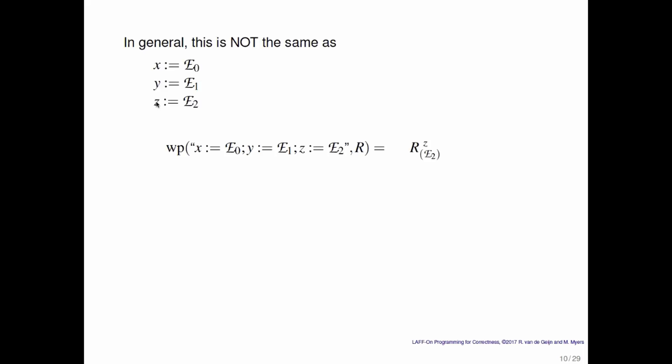You take your postcondition R, you replace every occurrence of z with e2, and then you take every occurrence of y and replace it with e1. Notice that if y occurs in e2, then this may not give the same result.